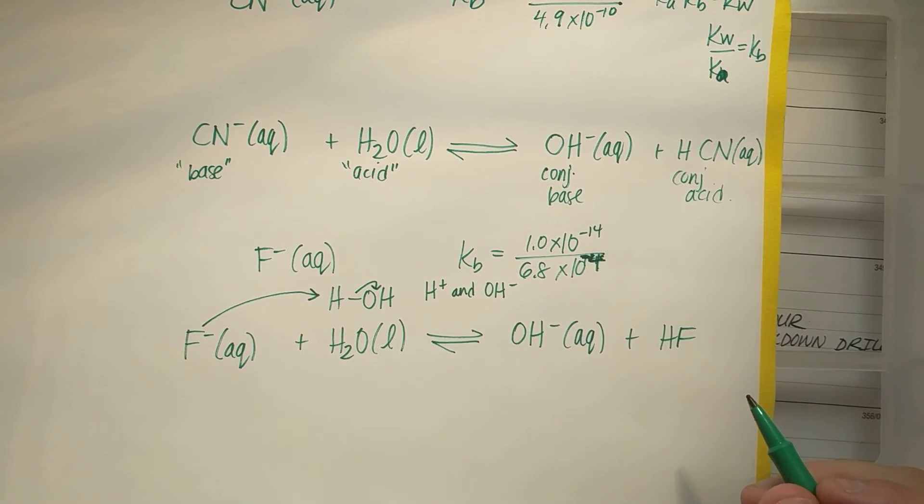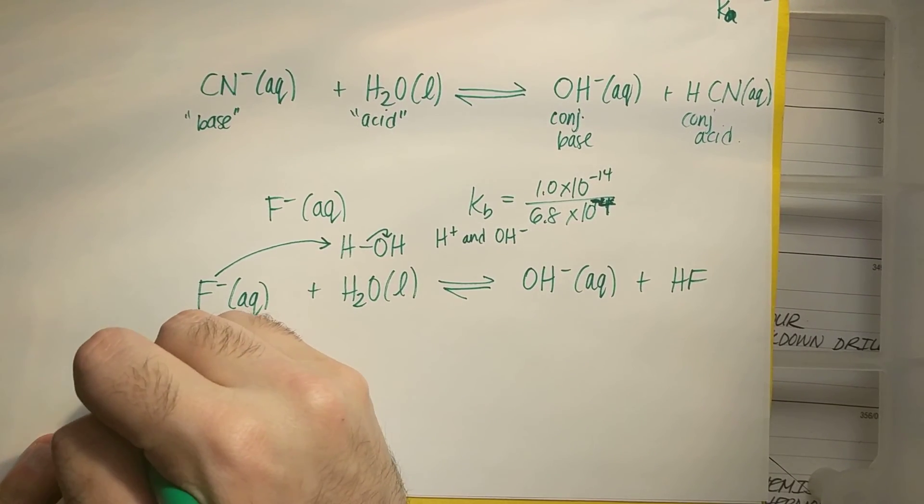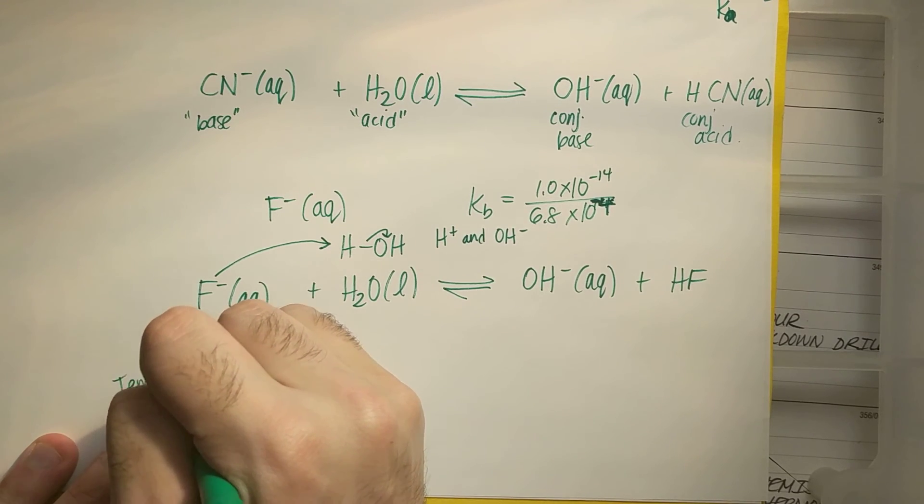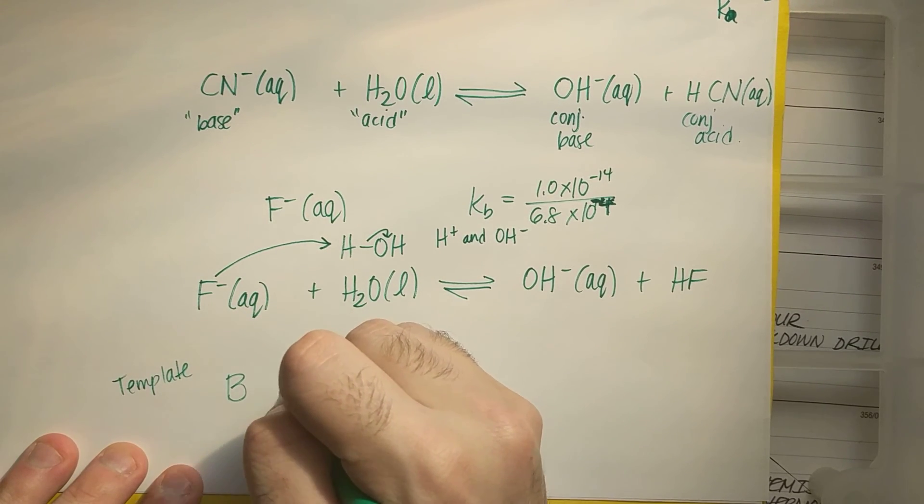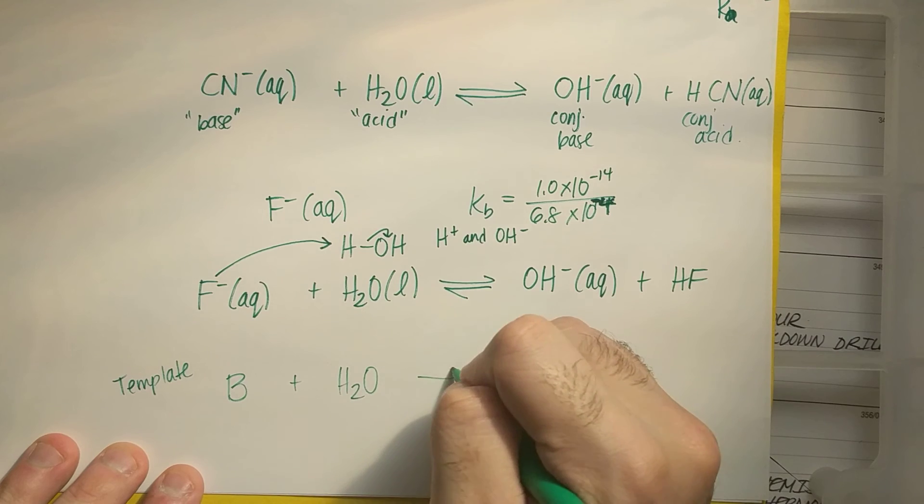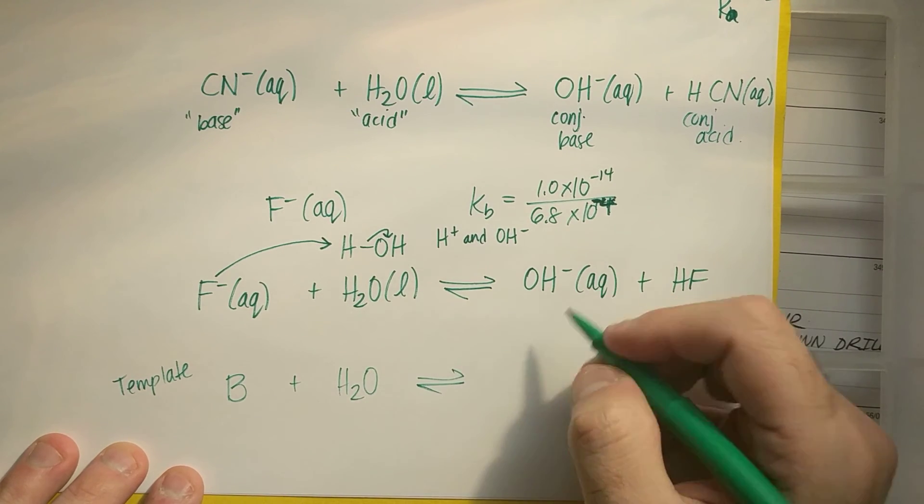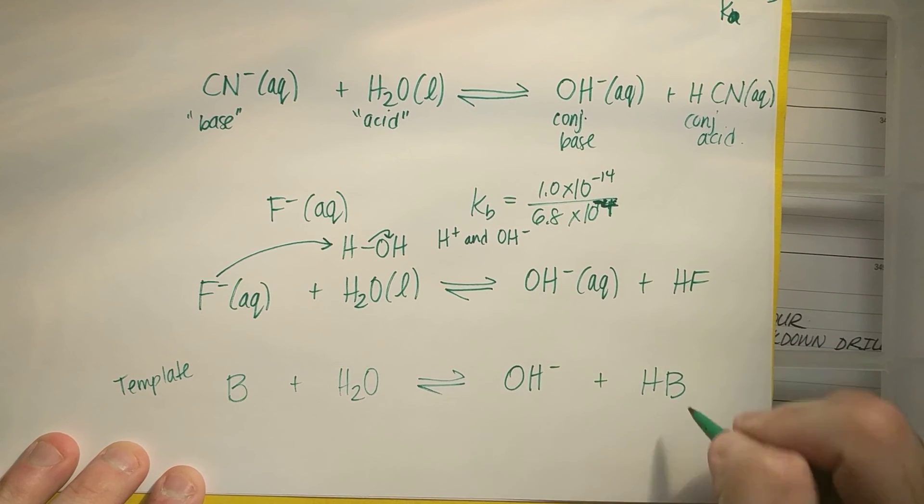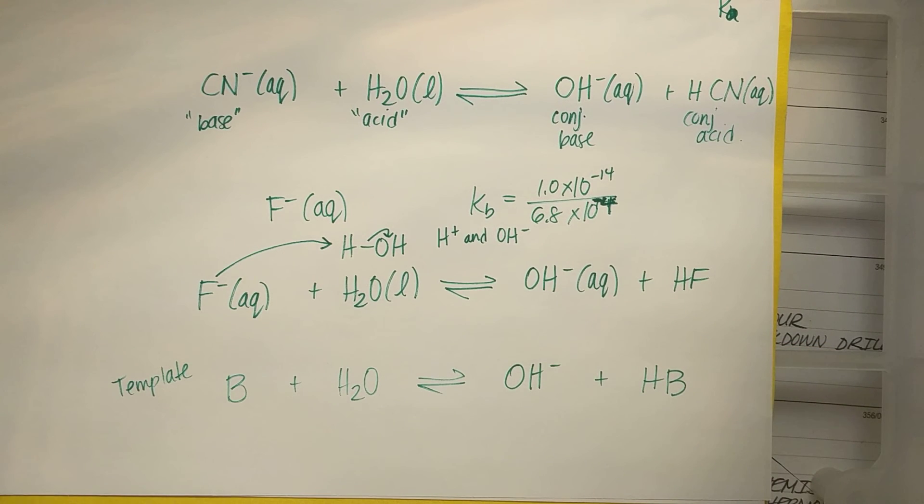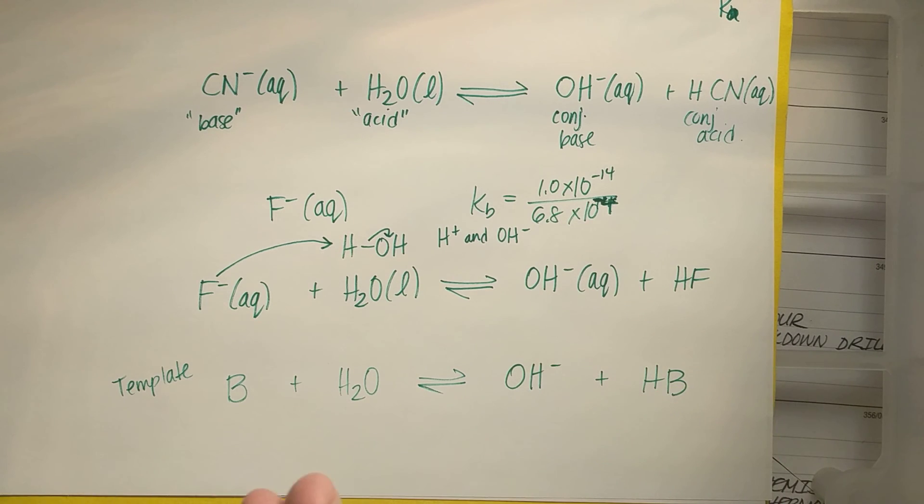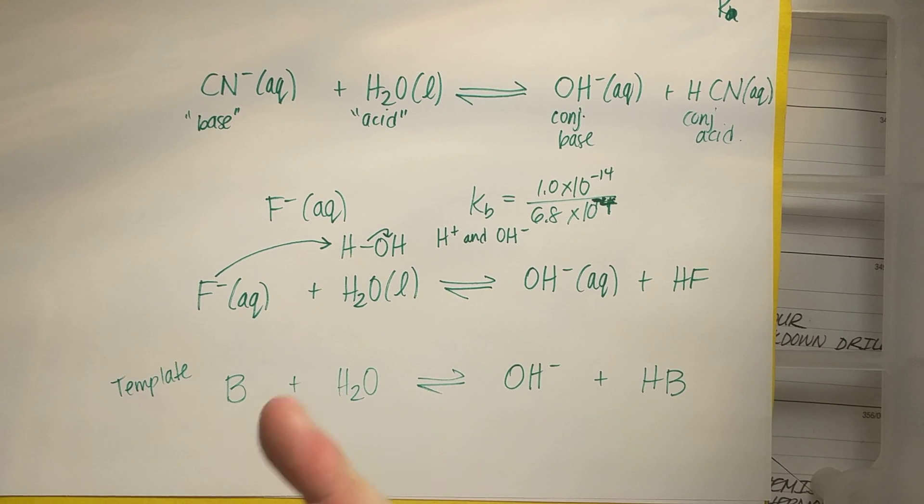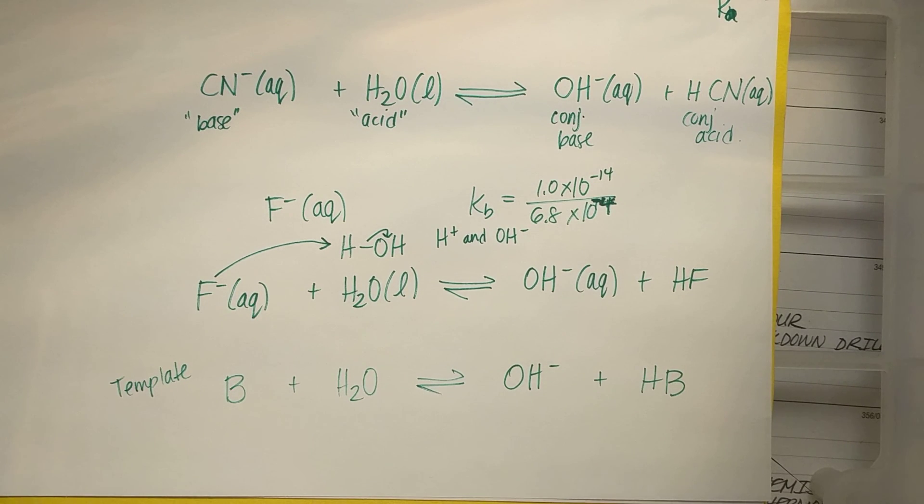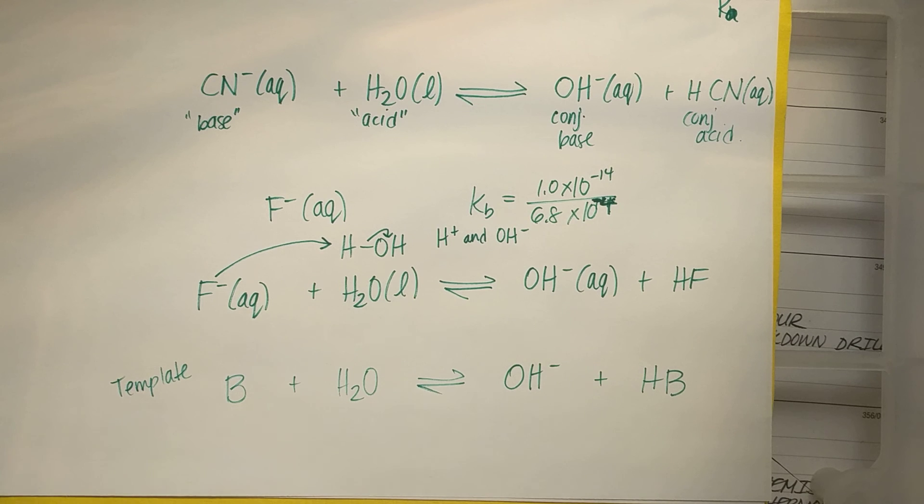So it looks like the template for a base dissociation would be B plus H2O in equilibrium, or it could be directly OH minus plus HB. So I'm hoping this was a nice, quick, or actually elaborate explanation of how we write acid and base dissociation equations. Let me know if you have any more questions or concerns over how we write these dissociation equations.